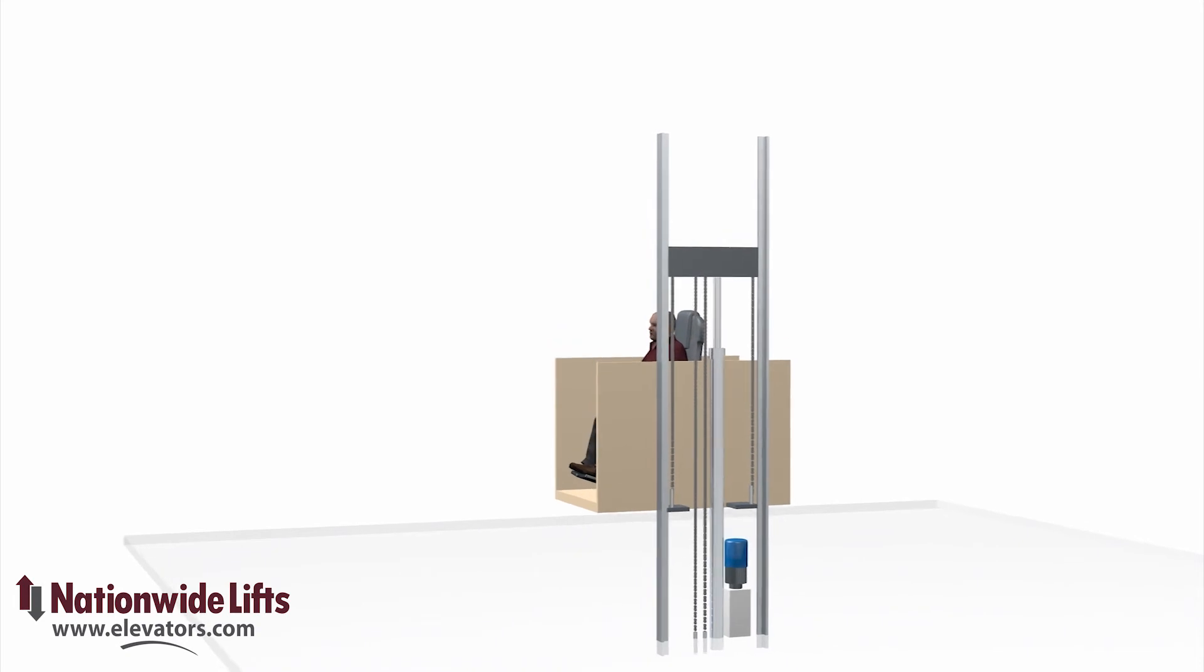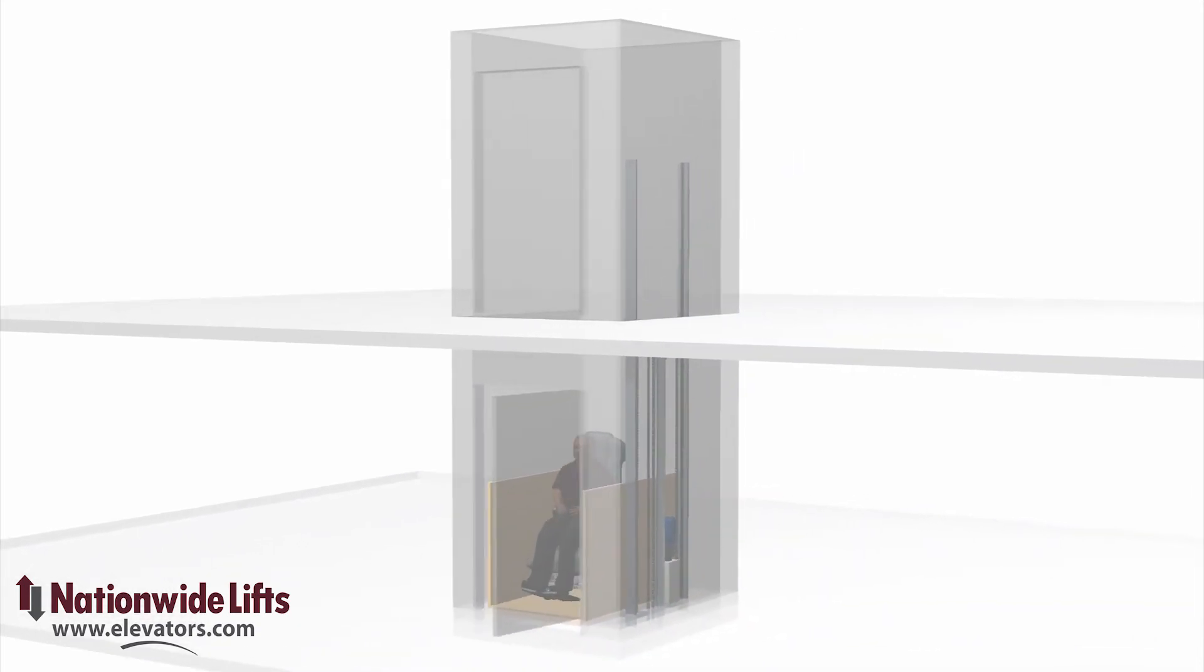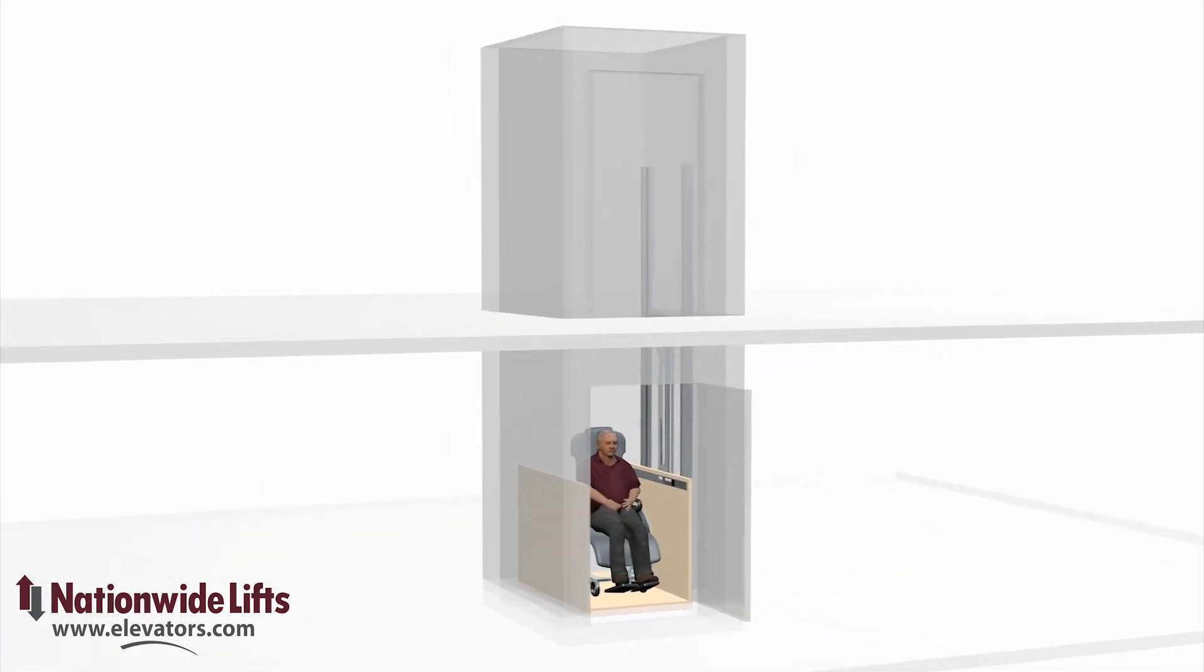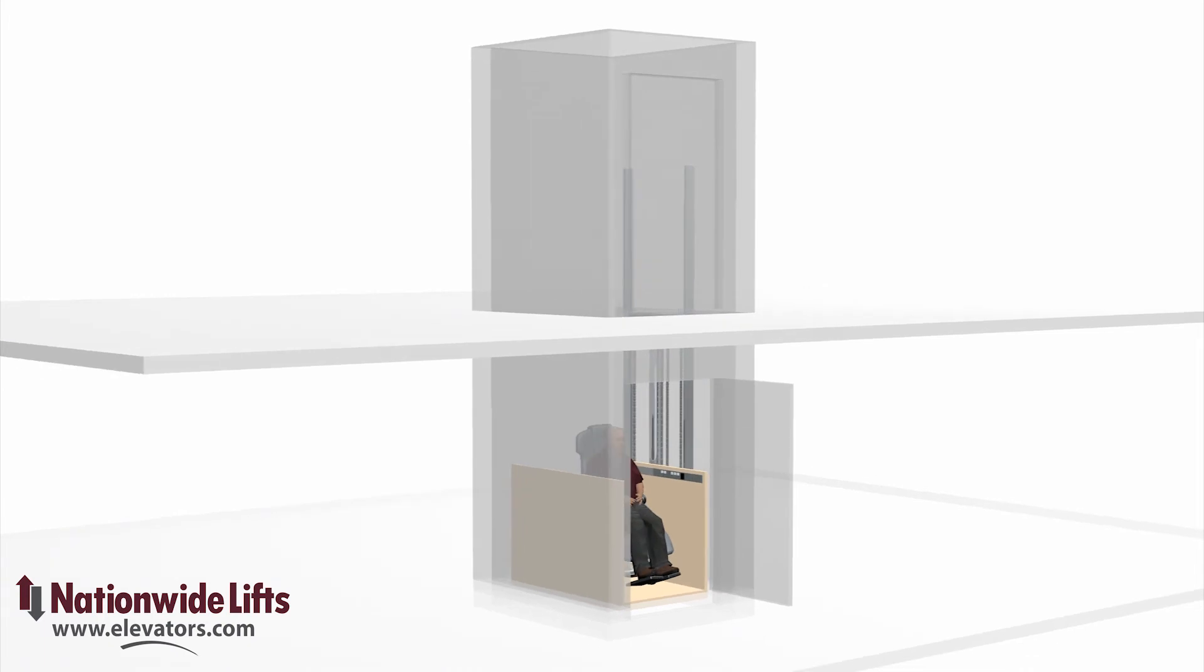The chained hydraulic wheelchair lift is considered machine room-less. The controller and pump unit are located in the hoistway, eliminating the need for a separate machine room or closet.